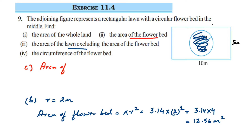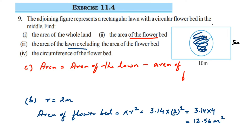Area of the lawn excluding the flower bed equals area of the lawn minus area of the flower bed, which is 50 minus 12.56. When you subtract these two we get the answer as 37.44 meter square.